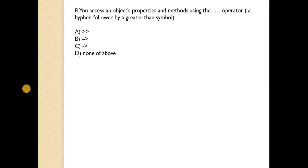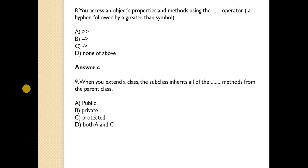You access an object's properties and methods using the dash operator. Answer is C. The arrow operator is used to access the properties.